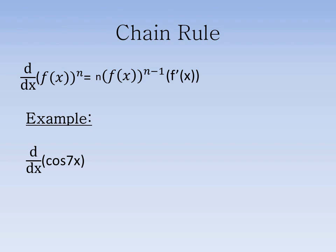All trigonometric functions use the chain rule. First, we derive the outer function, the cosine part, whose derivative is negative sine, and leave the inner function, 7x, alone. We then multiply this term by the derivative of 7x, which is 7.